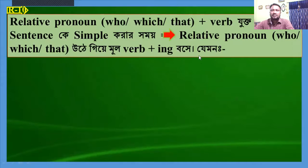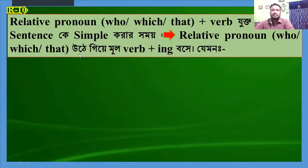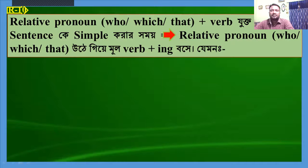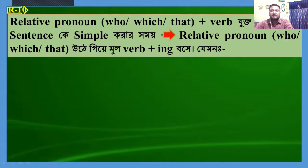Dear students, if we want to transform a complex sentence including a relative pronoun, we have to abandon the relative pronoun and use the ing form of the principal verb before the principal part. For example: